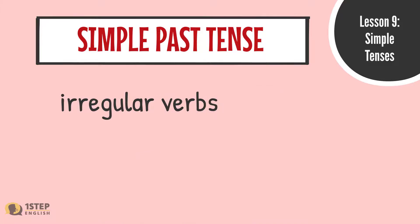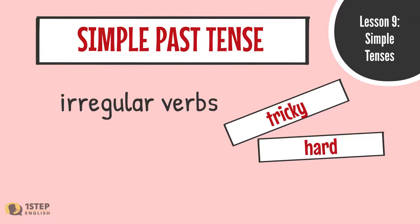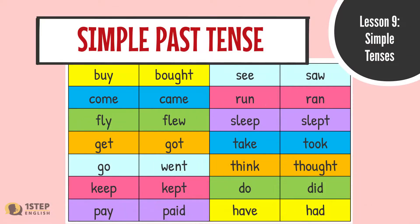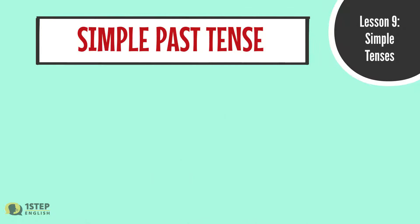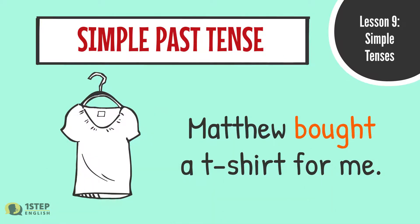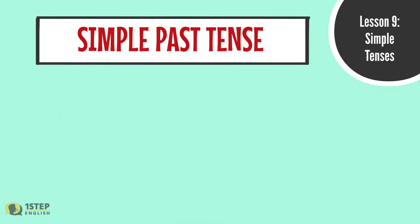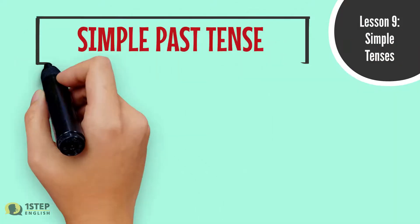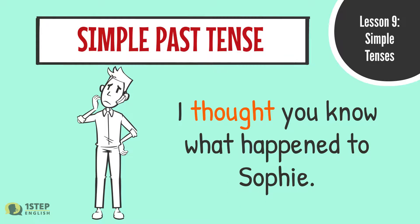In the simple past tense of irregular verbs, it can be a bit tricky and hard, but they don't have to be if you familiarize yourself with them. Here are some verbs that are irregular in the past tense. For example: 'Matthew bought a t-shirt for me' — bought. 'My parents came to the school to attend the meeting' — came. 'I thought you know what happened to Sophie' — thought. Please note that there is no easy way to learn how to conjugate irregular verbs in the past tense. You simply have to memorize them.